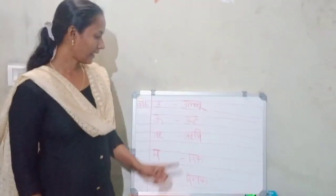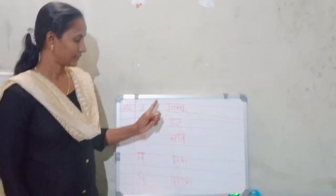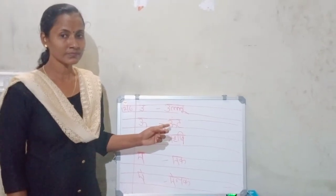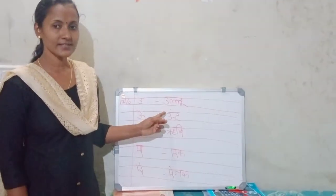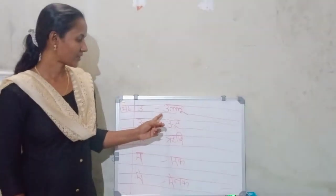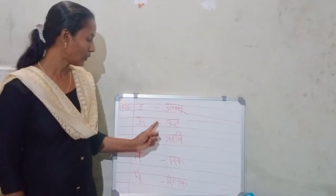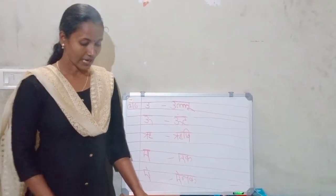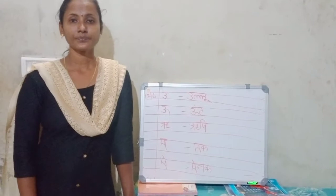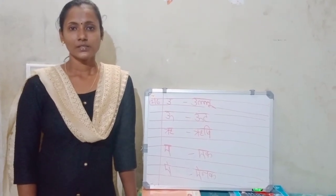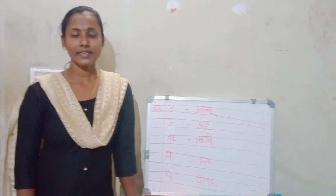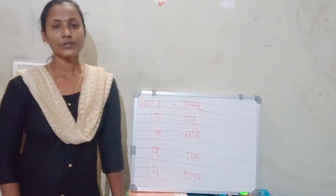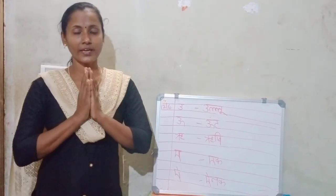Okay. Did you all finish writing? Did you all know how to read? So tomorrow, write five times — U se Ullu, U se Ud, R se Rishi, A se egg, A se enak. Okay. Are you all happy? So shall we finish this Hindi class? All are happy. Did you all enjoy? Thank you. Bye bye. See you tomorrow. Okay, Namaste.